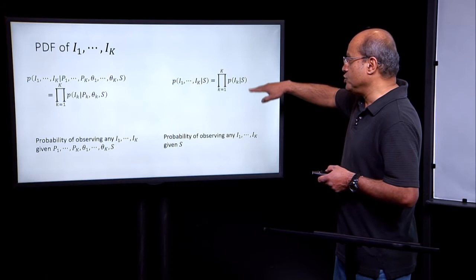This tells you what is the probability density of actually observing i1 through ik given the structure s.